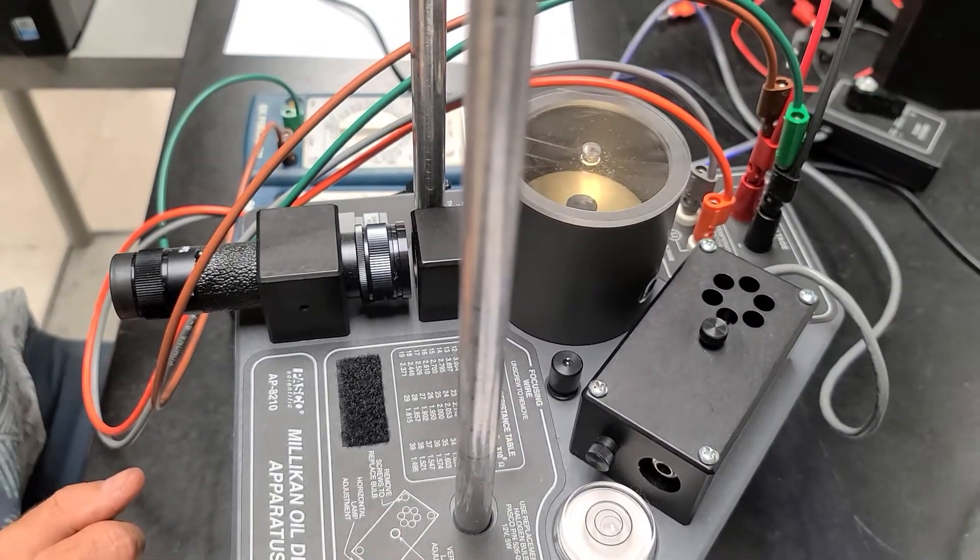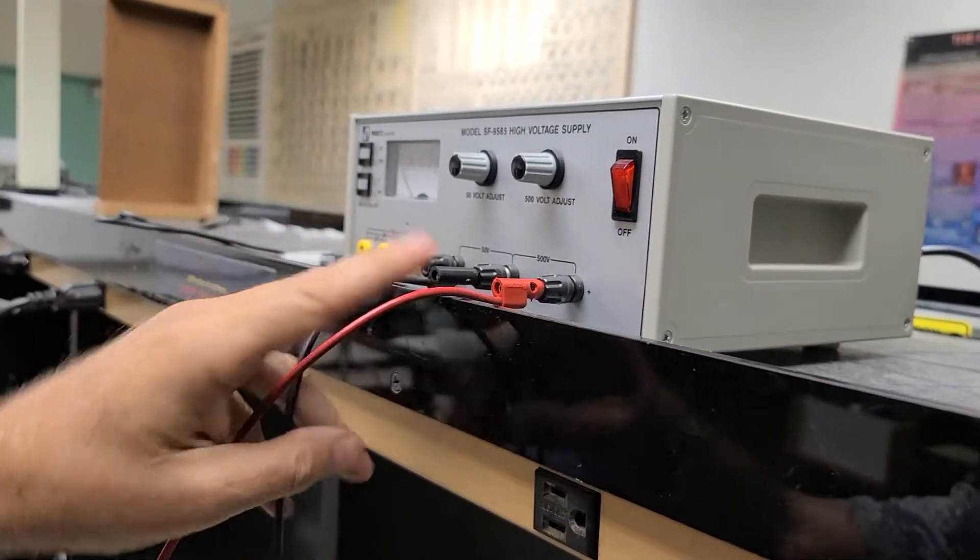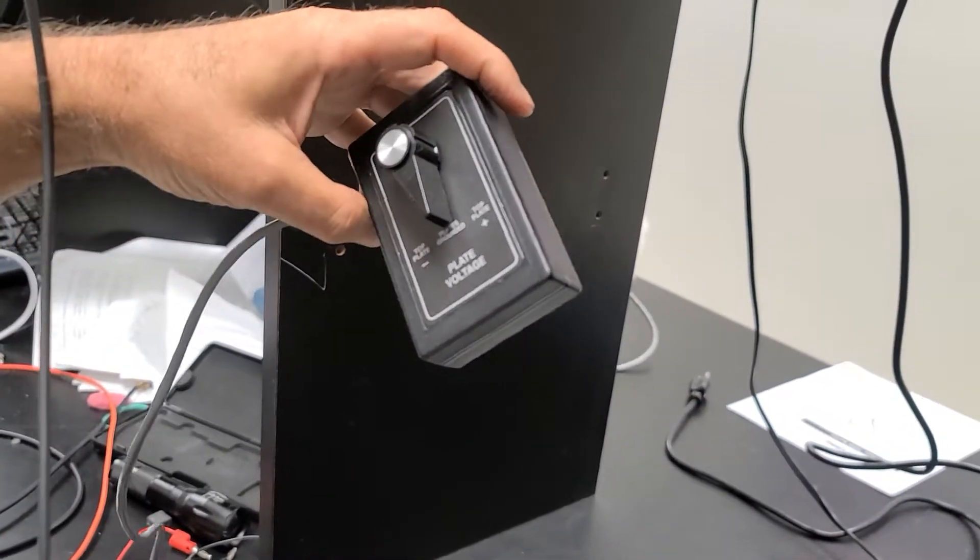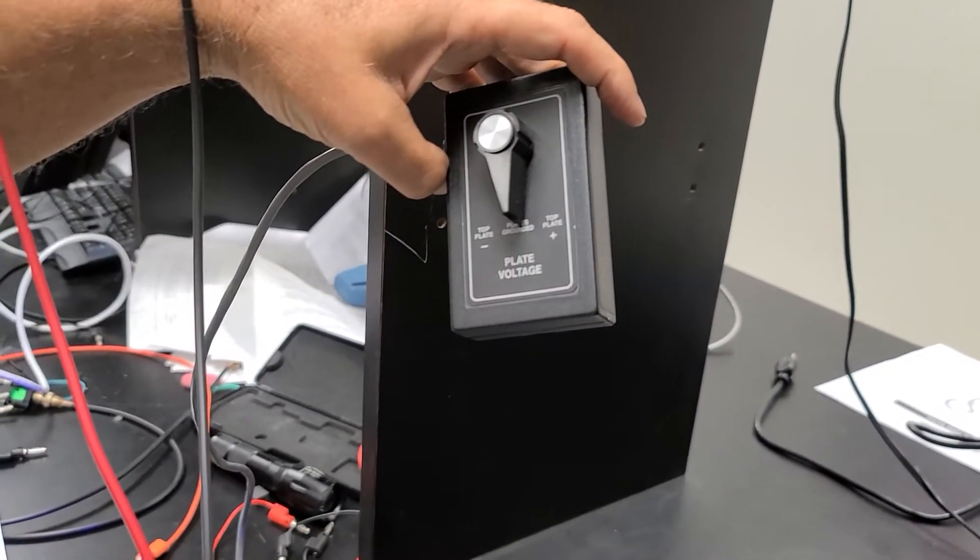These two wires here are going to go to this power supply which is going to give us between 0 and 500 volts. And this switch here is going to enable us to either ground the plates together or change the polarity of the plates. In other words, if the bottom plate is negative then the oil droplets are charged negatively. There are two parallel plates in there, right? Yeah, we're going to take it apart to show you that.